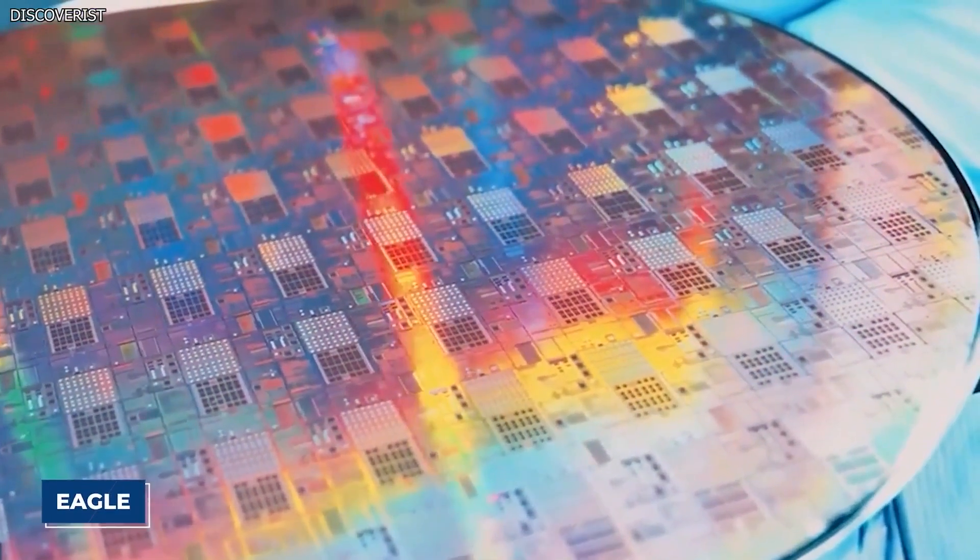Alongside Condor, IBM introduced another breakthrough. Heron, IBM's largest processor to date and one of the largest of any firm, a 133-qubit chip three to five times faster than IBM's previous high-performance chip, Eagle.